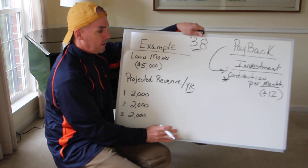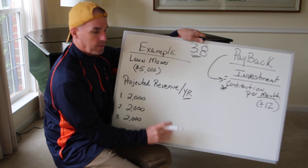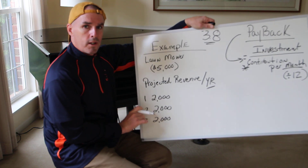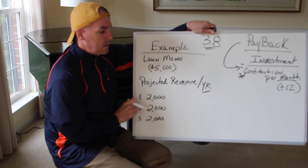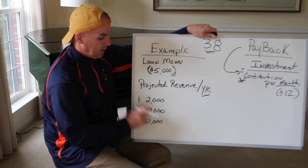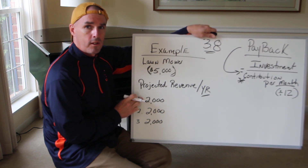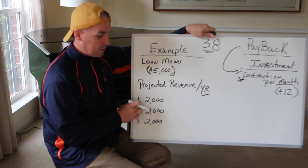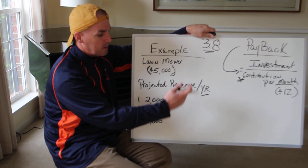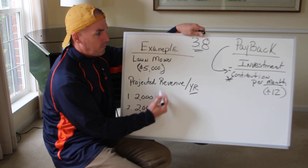This works really well if, for example, I buy a lawnmower for $5,000. My return on that lawnmower — meaning I'm going to invest $5,000, a negative number — the first year I have the lawnmower I'm going to make $2,000. The second year I'm going to make another $2,000, and the third year another $2,000. So it stays consistent from year to year.